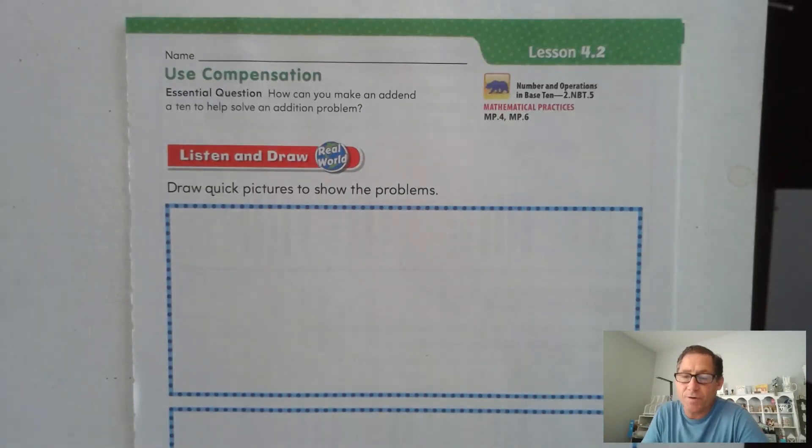Hello, everybody. In lesson 4.2 on page 177 of the second grade GoMath textbook, we're going to be talking about a concept known as compensation.